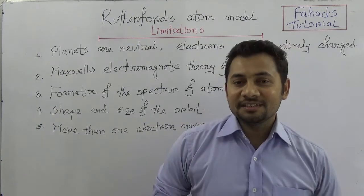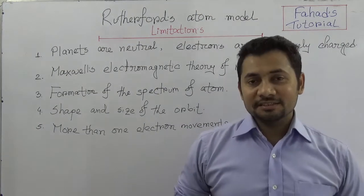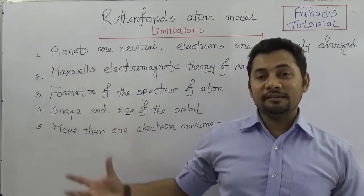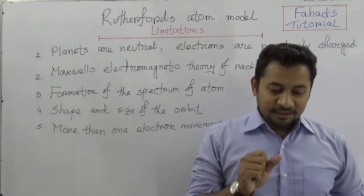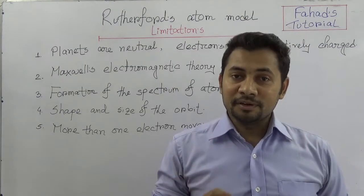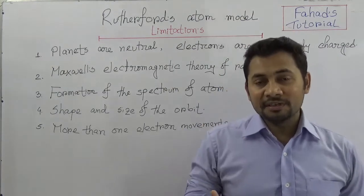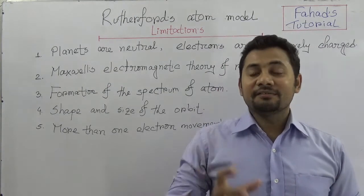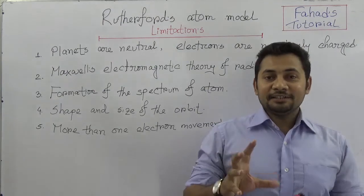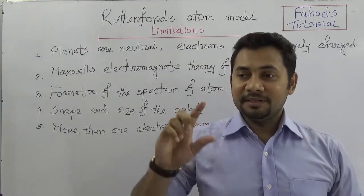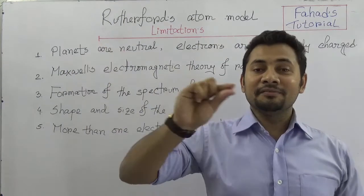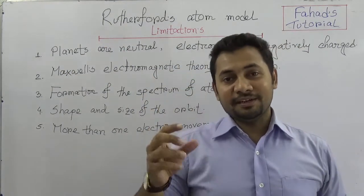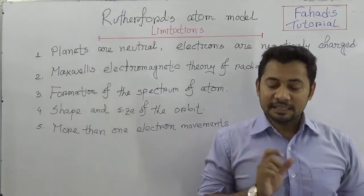If the question is what are the limitations of Rutherford's model, then we need to state five main concepts. You already know what the Rutherford model is — it was compared with the solar model because, according to Rutherford, atoms resemble the solar system, with electrons revolving around the nucleus just as planets revolve around the sun. But there are some limitations.